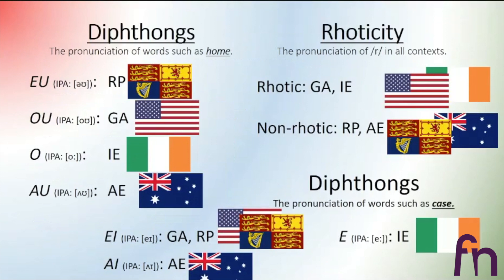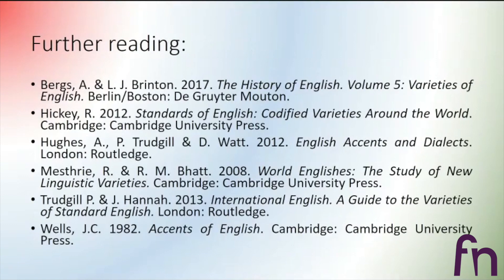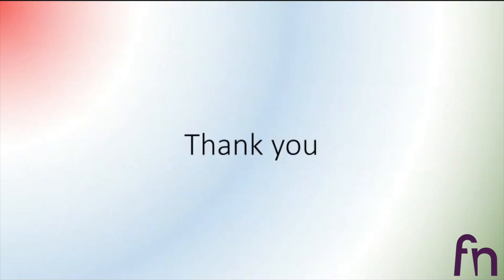Here we have a summary. The diphthong in 'home': [oʊ], [əʊ], [oː], [ɔː]. The diphthong A: 'case' [eɪ], 'case' [eː], or 'case' [ɑɪ]. And rhoticity — rhotic dialects and non-rhotic dialects. That is all for today. We had very little time, so of course there are more dialectal differences. If someone is interested, these are some of them, and you can refer to the literature — books about dialects of English. Thank you very much for participating. Goodbye.